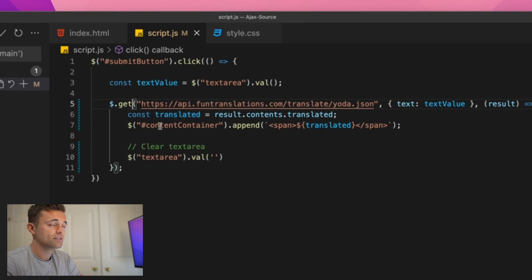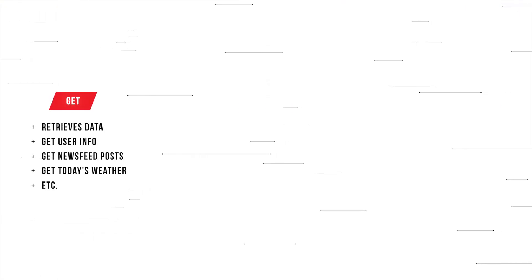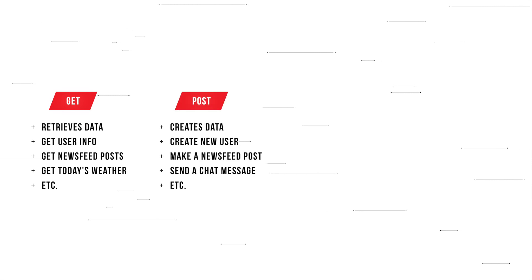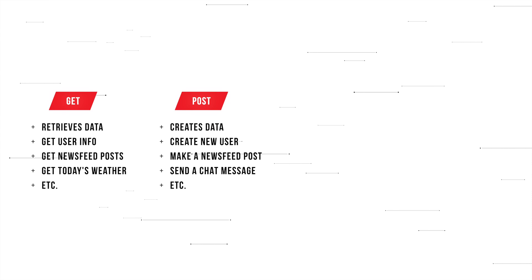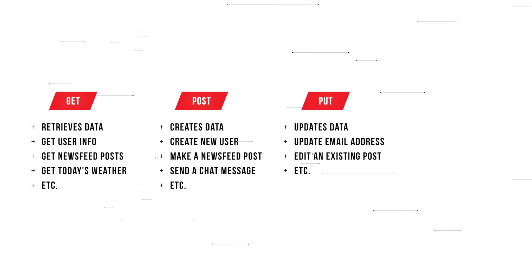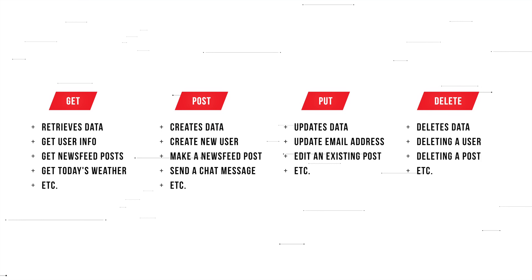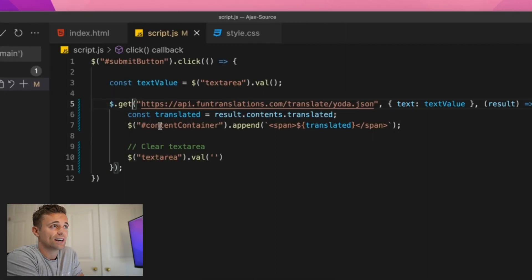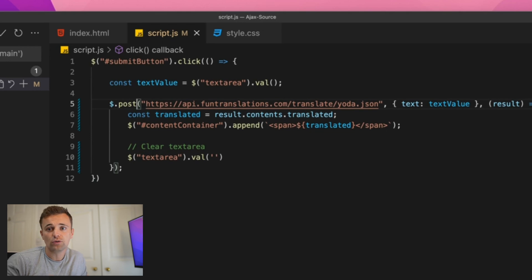As a general rule: a GET request to an endpoint retrieves data — like getting a list of users. A POST request usually adds new data — like creating a new user. PUT often updates a record — like updating a user's name. DELETE, as the name suggests, deletes a record. That said, it all depends on how the person set up the API — there's no universal rule, it's entirely down to whoever made the endpoint.